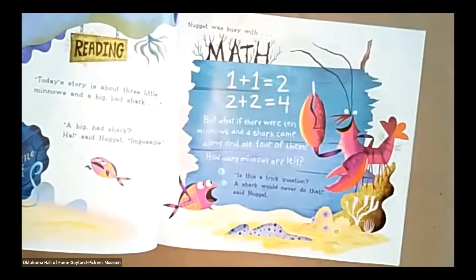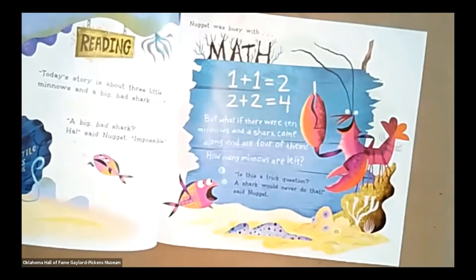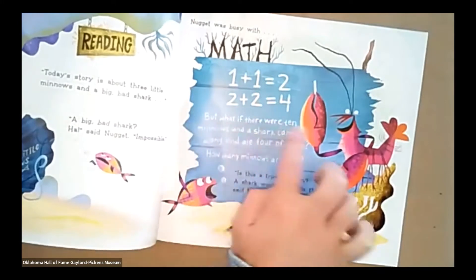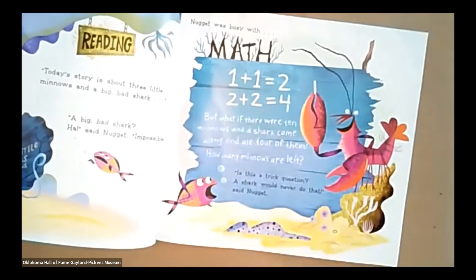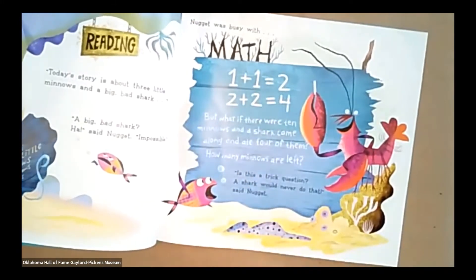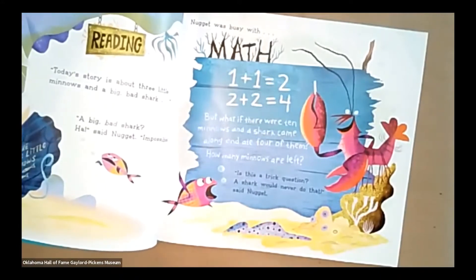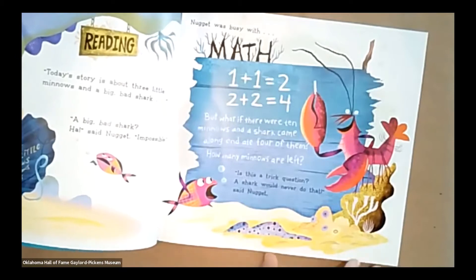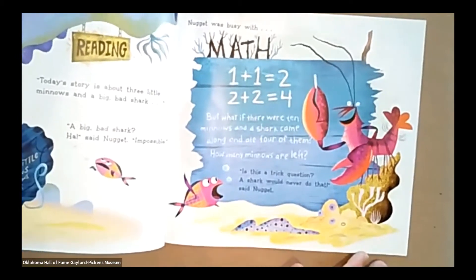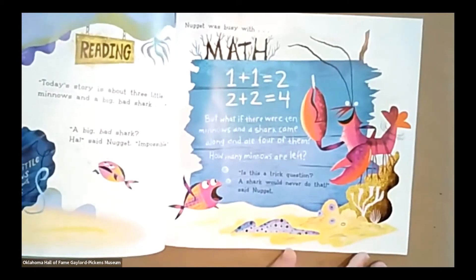Nugget was busy with math. So it looks like we have a word problem here. But what if there were 10 minnows and a shark came along and ate four of them? How many minnows are left? Is this a trick question? A shark would never do that, said Nugget.